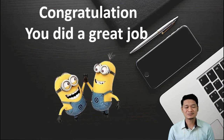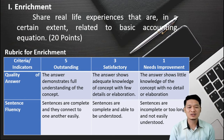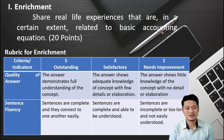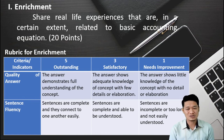Congratulations! You did a great job! For the last part of our lesson, share your real-life experiences that are, to a certain extent, related to the basic accounting equation, for a total of 20 points. For our rubrics — criteria and indicators: quality of answer and sentence fluency. Outstanding, 5 points: the answer demonstrates full understanding of the concept; sentences are complete and connect to one another easily. Satisfactory, 3 points: the answer shows adequate knowledge of the concept with a few details or elaboration; sentences are complete and able to be understood. Needs improvement, 1 point: the answer shows little knowledge of the concept with no detail or elaboration; sentences are incomplete or too long and not easily understood.